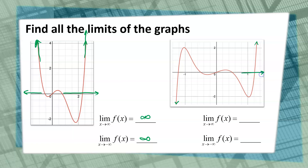Now, as x approaches positive infinity — as x is going to the right — the y-values are going up and up and up, approaching positive infinity. And as x approaches negative infinity, on the left side of the graph, the y-values are going down, approaching negative infinity.